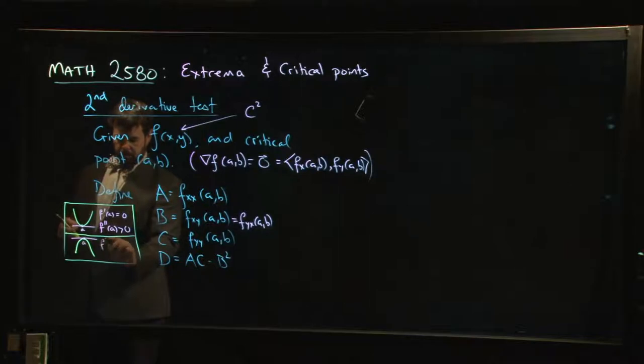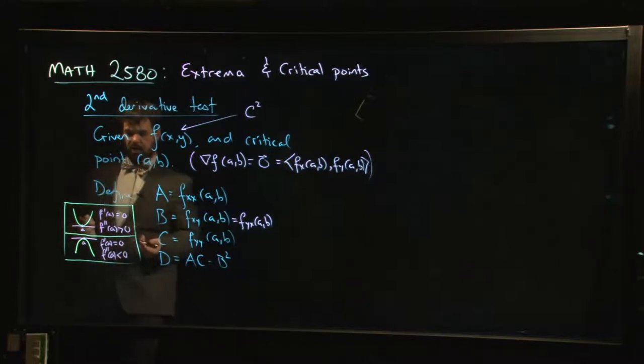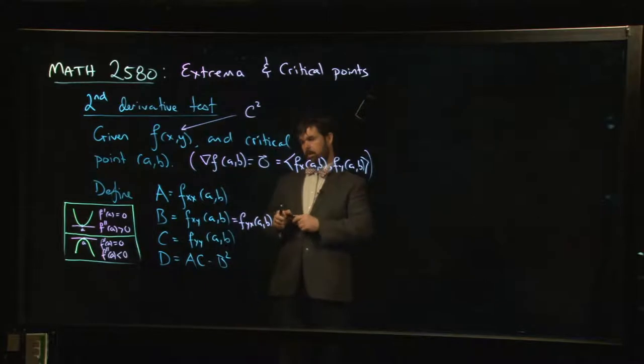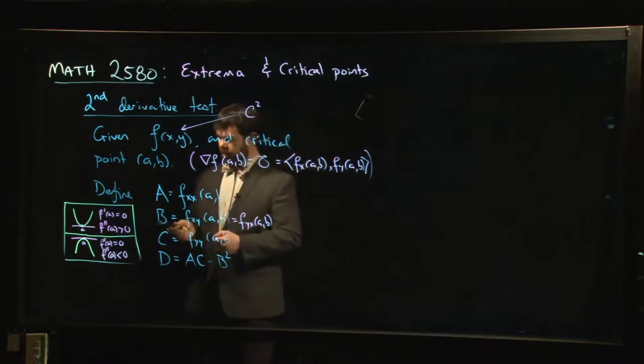But if you stay away from those sorts of degenerate cases, this is more or less the generic situation. For a maximum, the first derivative is still zero, but the second derivative, well now it's concave down, so the second derivative is negative. So that's not so bad. We try to generalize this idea.